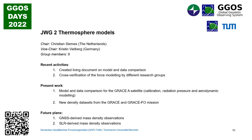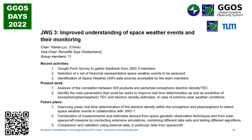Working group number two is related to the thermosphere. We will later listen to a talk from Ehsan who will give information about that. Finally, we have joint working group number three, chaired by Heiko Aliu, who took over from Alberto Garcia-Rigo from Spain. Benedikt is the vice chair. We have 11 members in that group. In this group we handle the combination of space weather measurements and space geodetic measurements. This is a challenge as many additional elements have to be considered, and it is on a good way.